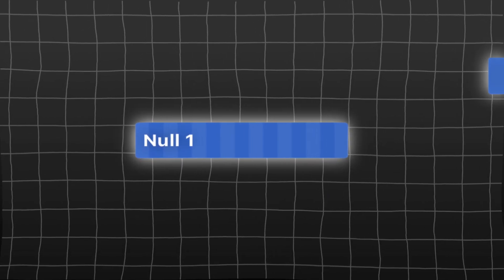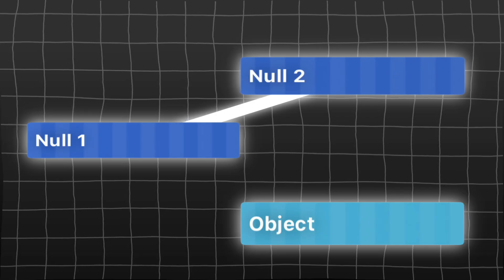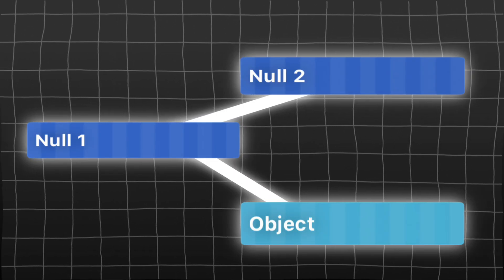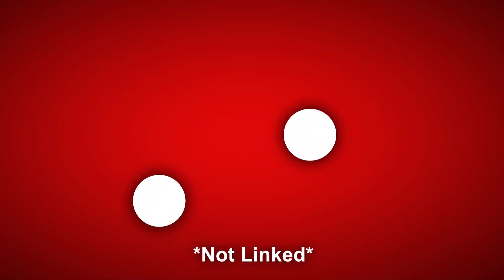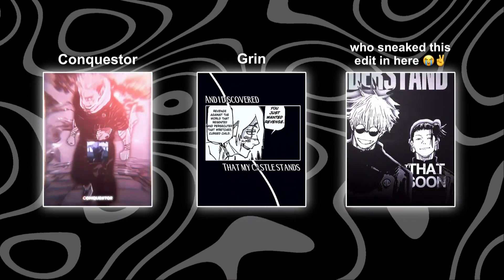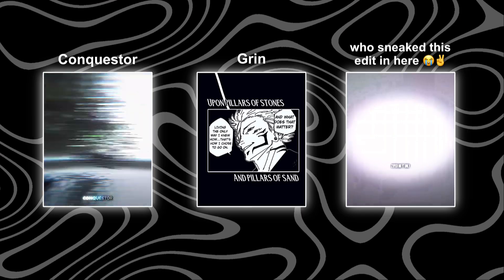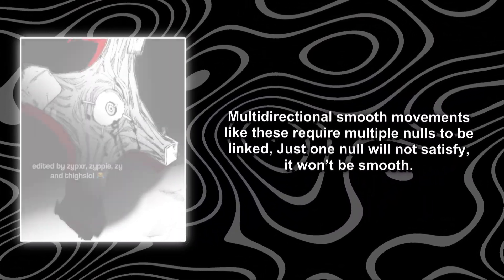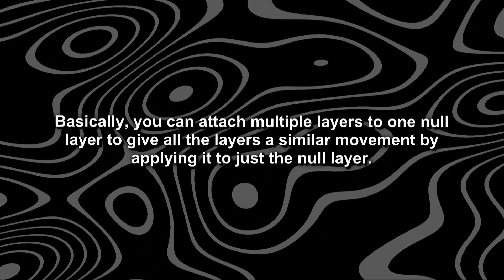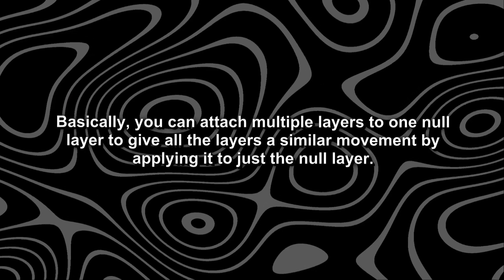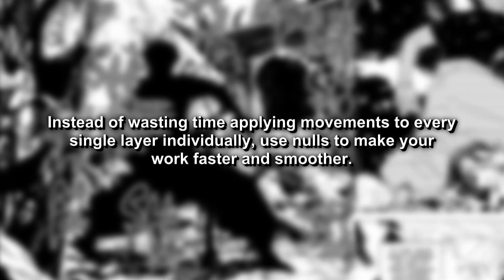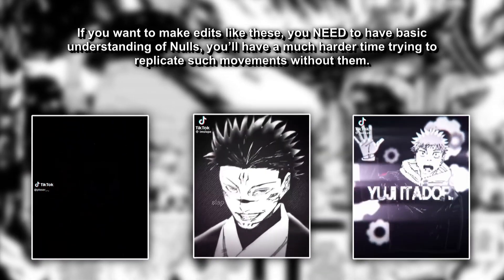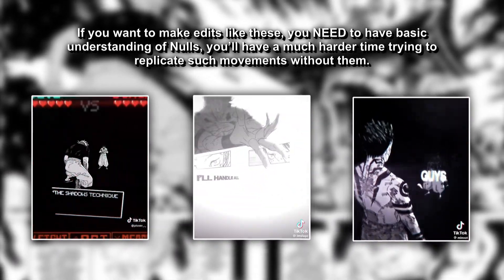A null layer can also be linked to another null layer. Doing so will cause any movement done on the second null layer to be passed on to the first null layer and all objects connected to it. Doing this will not disturb the properties of the first layer itself, but only influence it. This is exactly what's done by most editors you watch to create these smooth movements in different directions — multiple layers of nulls linked to one another. You can attach multiple layers to one null layer to give all the layers a similar movement by applying it to just the null layer.